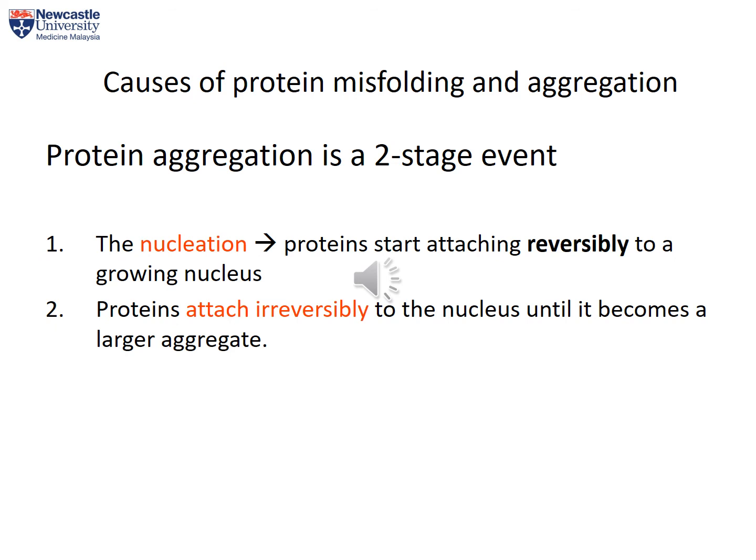Protein aggregation is a two-stage event. Stage 1 is nucleation, by which proteins start attaching reversibly to a growing nucleus. When proteins start attaching to one another irreversibly in stage 2, eventually it will become a larger aggregate. Nucleation is reversible in the early stage, but when the PQC system is overwhelmed by misfolded proteins, it will irreversibly shift towards stage 2, which is protein aggregate production.